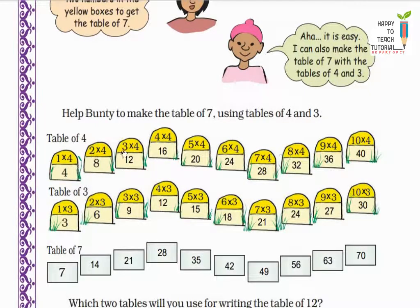First write the table of 4: 4×1=4, 4×2=8, 4×3=12, 4×4=16, 4×5=20, 4×6=24, 4×7=28, 4×8=32, 4×9=36, 4×10=40. Now write the table of 3: 3×1=3, 3×2=6, 3×3=9, 3×4=12, 3×5=15, 3×6=18, 3×7=21, 3×8=24, 3×9=27, 3×10=30. Now we will add these numbers from the yellow boxes. So 4+3=7, 8+6=14, 12+9=21, 16+12=28, 20+15=35, 24+18=42, 28+21=49, 32+24=56, 36+27=63, and 40+30=70.